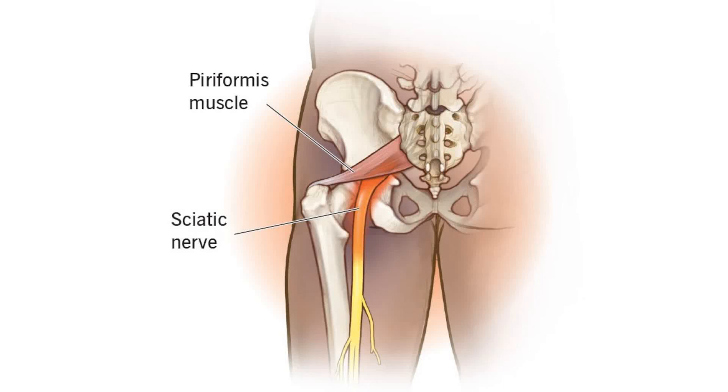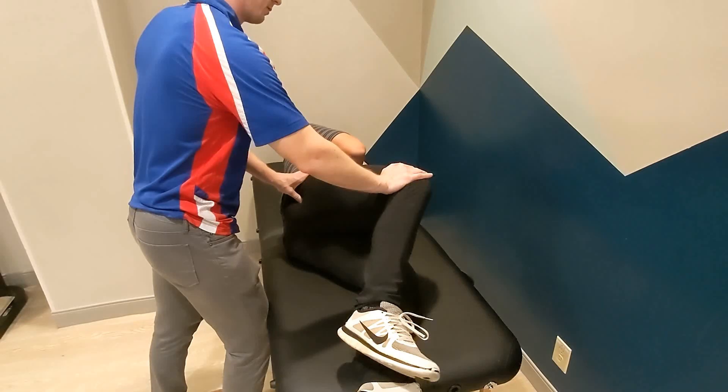The active piriformis test evaluates for piriformis syndrome. The patient is in the lateral decubitus position with the affected side up. Palpate the piriformis muscle belly.